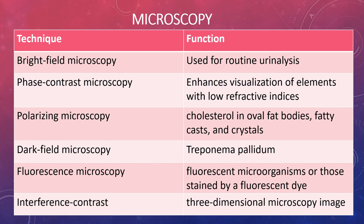The bright field microscope is the most commonly used type in urinalysis, hematology, and microbiology. Other microscopes include phase contrast, which enhances visualization of elements with low refractive indices such as hyaline casts, mixed cellular casts, mucous threads, and Trichomonas vaginalis. The polarizing microscope is useful for identification of cholesterol, oval fat bodies, fatty casts, and crystals. Dark field microscopes aid in the identification of Treponema pallidum, the bacterium responsible for syphilis. Fluorescence microscopy allows visualization of naturally fluorescent microorganisms or those stained by a fluorescent dye, including labeled antigens and antibodies. Interference contrast microscopy can produce three-dimensional images and layered imaging of a specimen's crystals.